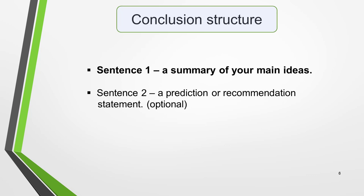The ideal conclusion has one or two sentences. The most important sentence is the first one, where you sum up your main ideas. You can add a second sentence if you want to, to give a prediction or recommendation. The second sentence is optional, but perfectly acceptable if you want to add one. It's useful if you find that you're just below the word limit and need just one more sentence to get you over the minimum 250 words. If your essay is long enough, leave it out, as it won't earn you extra marks. Your time will be better spent checking your grammar and spellings.